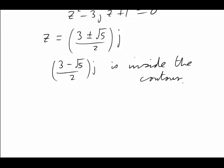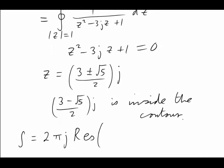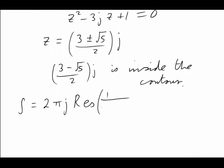In order to evaluate the integral, then, we need to use Cauchy's residue theorem, which tells us that the integral has the value 2πj times the residue of 1 over z² - 3jz + 1 at the pole which is inside the contour, which was (3 - √5)/2 × j.